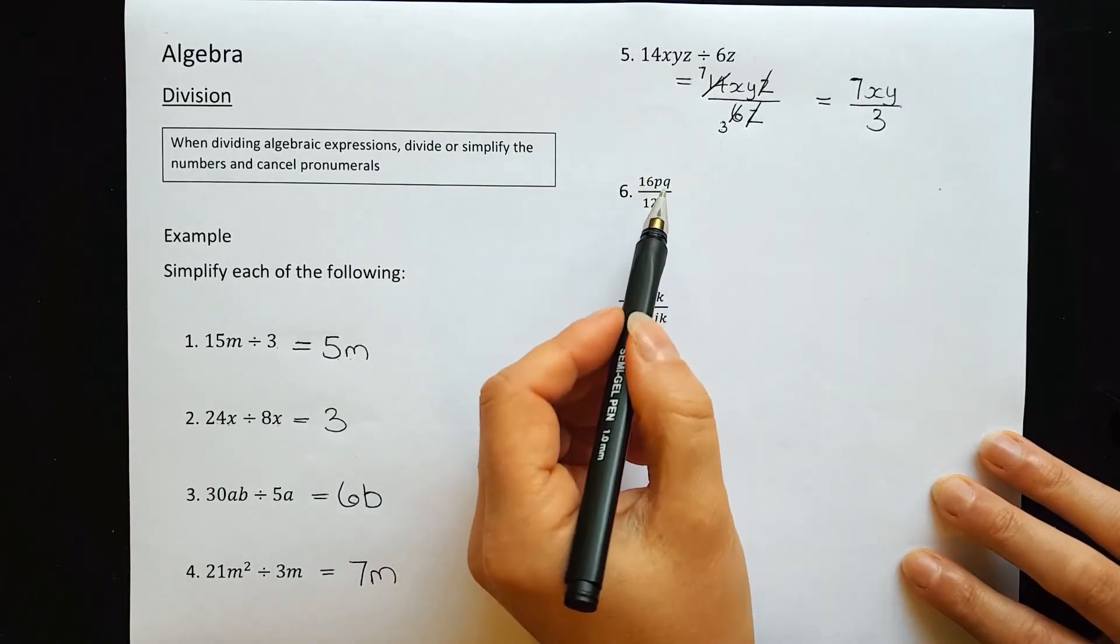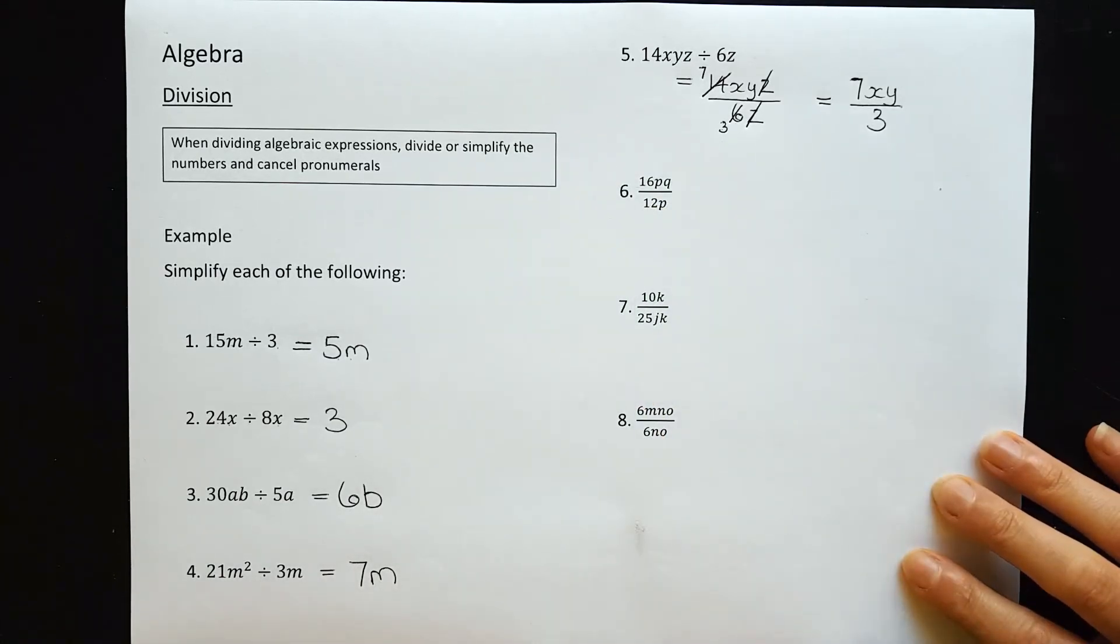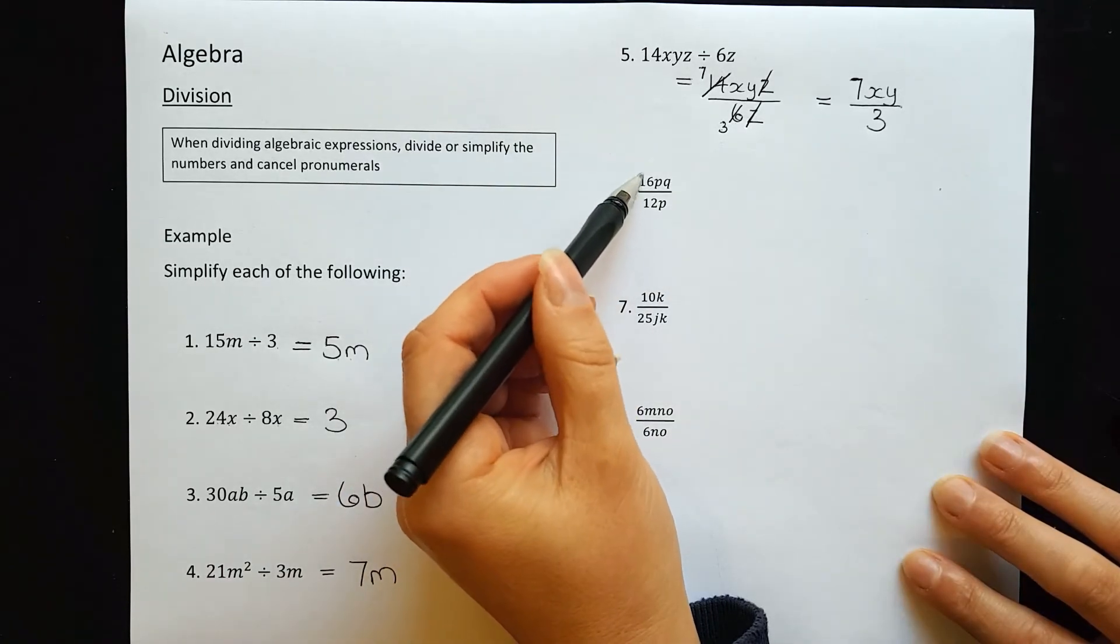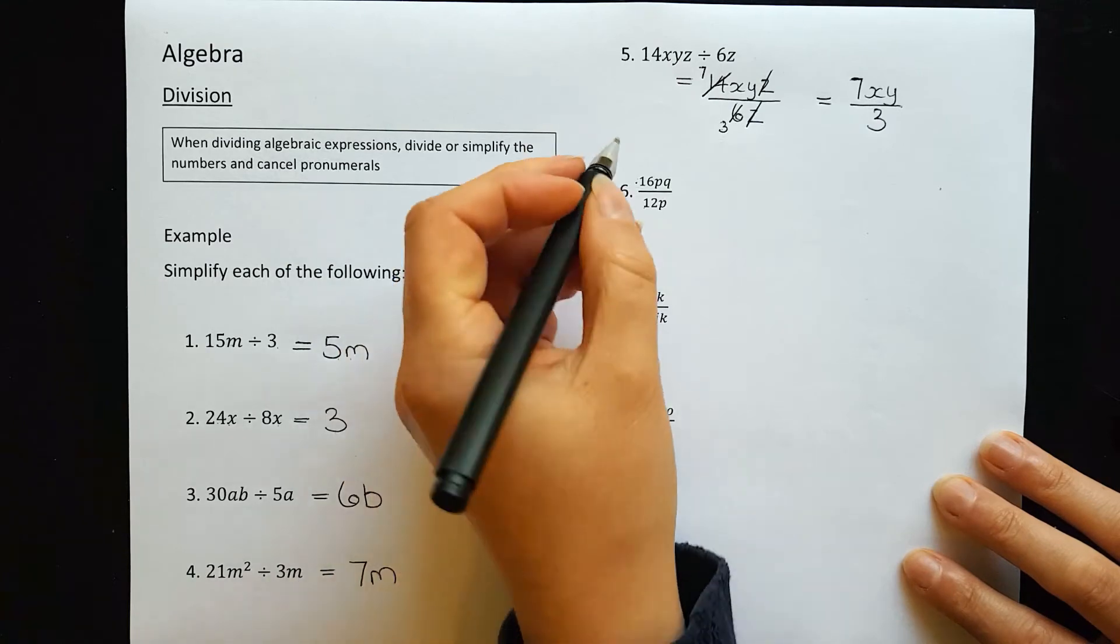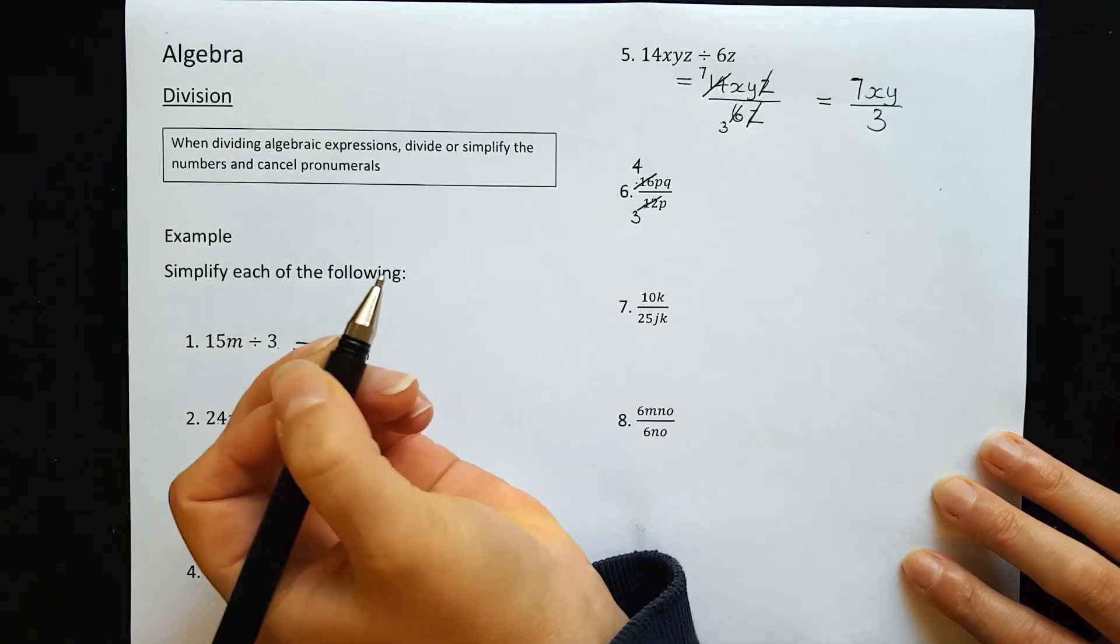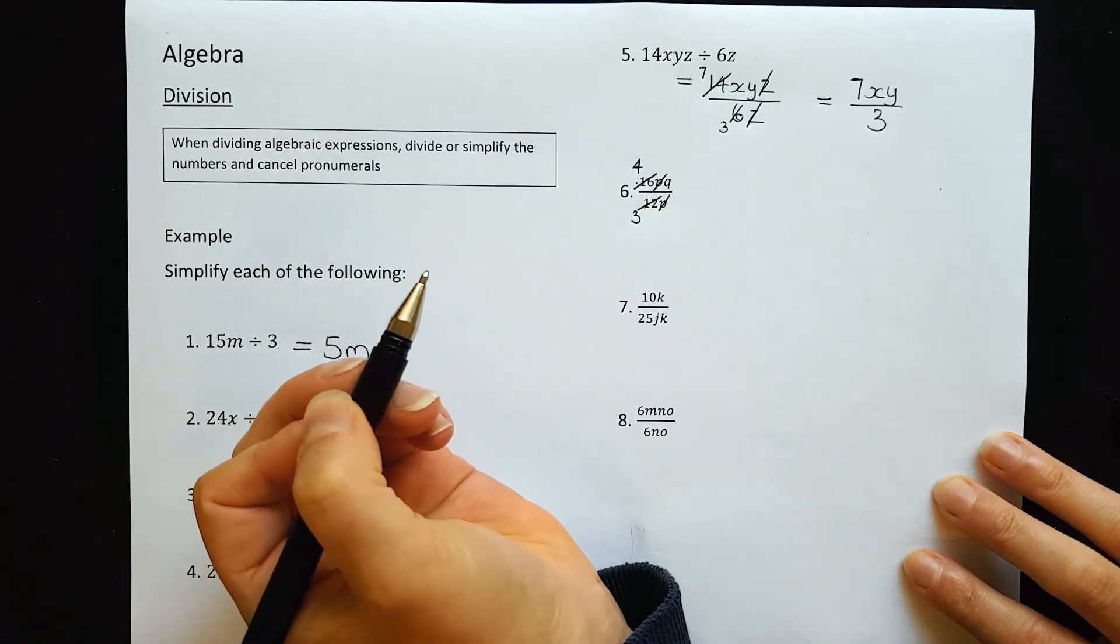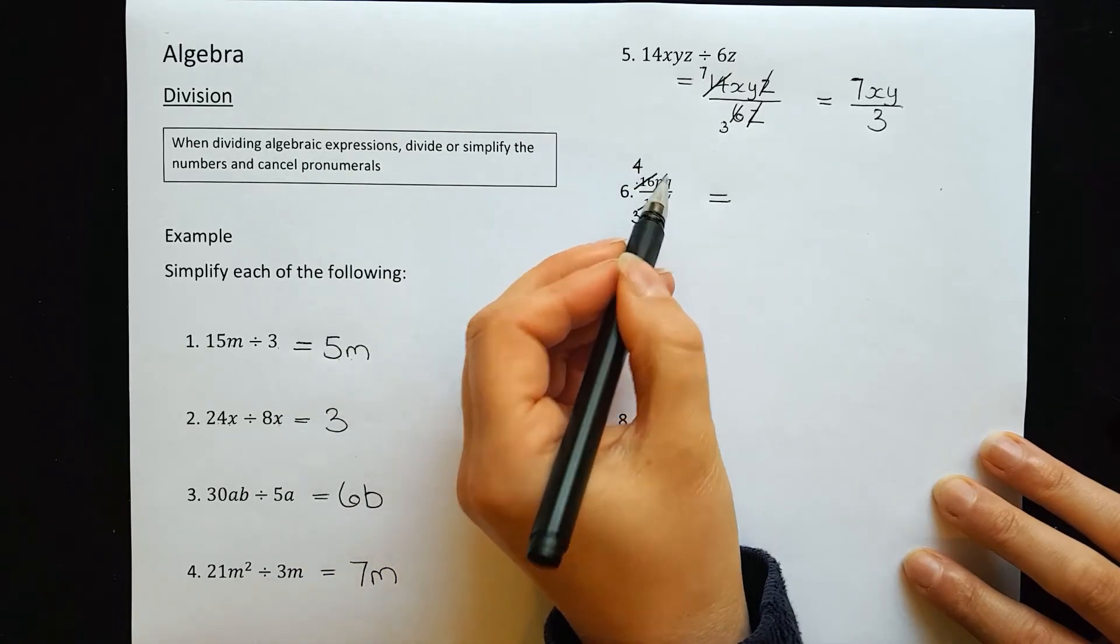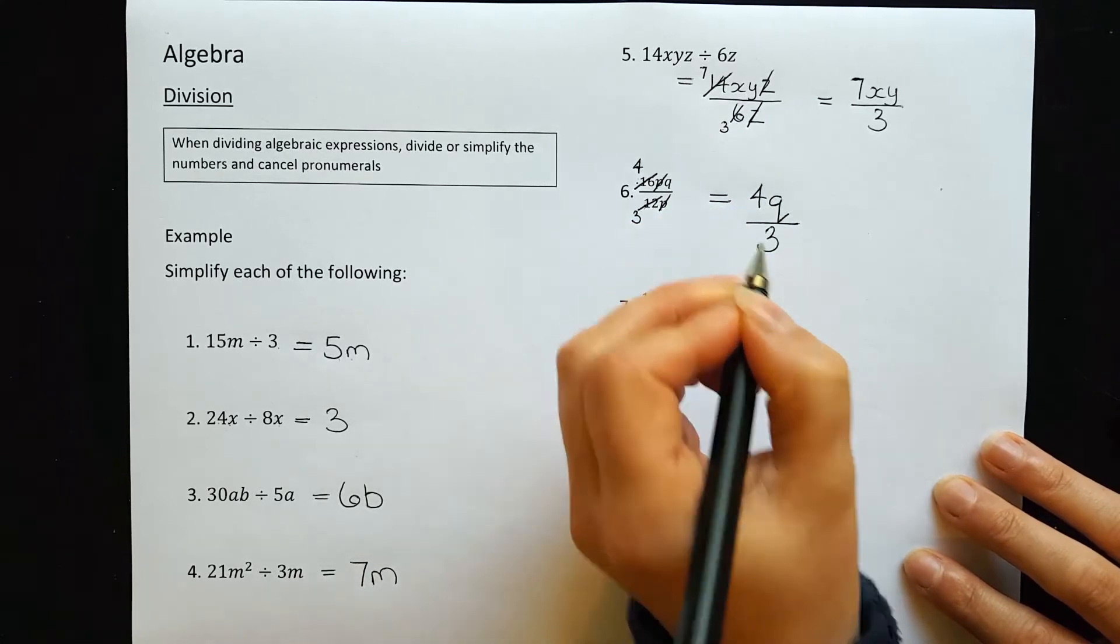Question 6: 16pq over 12p. These have already been written as fractions for us, so we proceed like question 5, looking for things we can simplify. 16 and 12 can both be divided by 4: 16 divided by 4 gives 4, and 12 divided by 4 gives 3. I also have a p on top and bottom, so I can cross those out. What's left is 4q over 3.